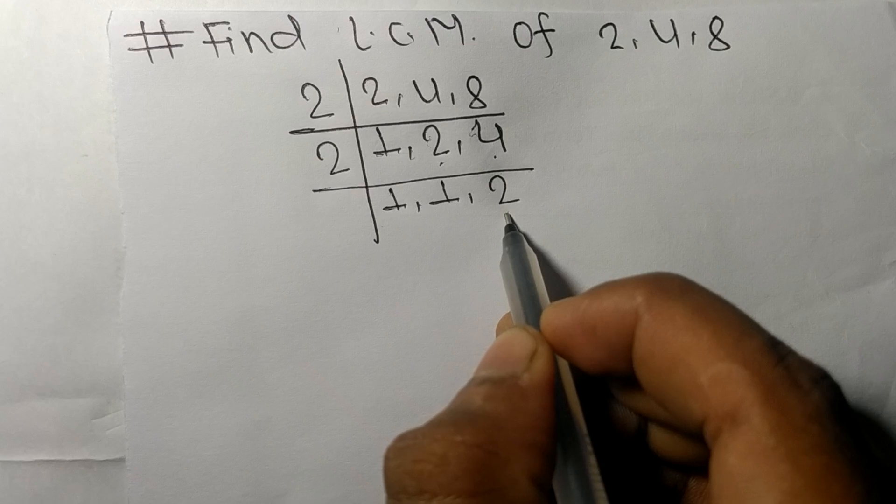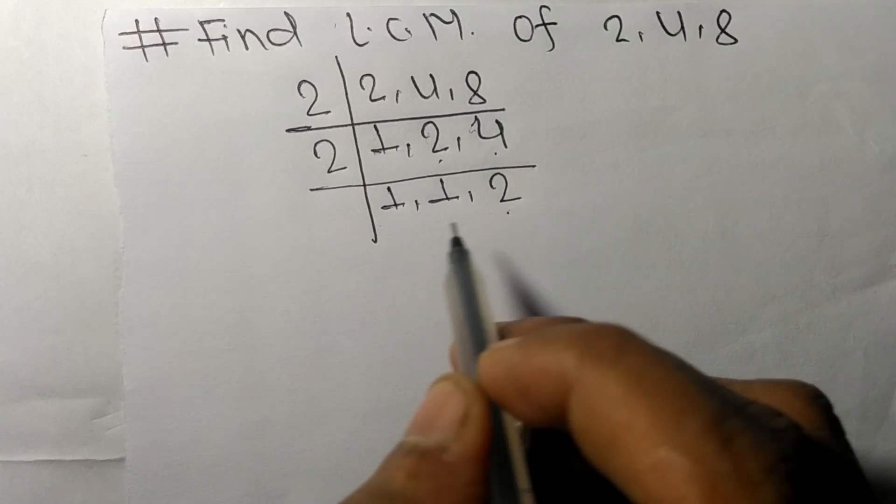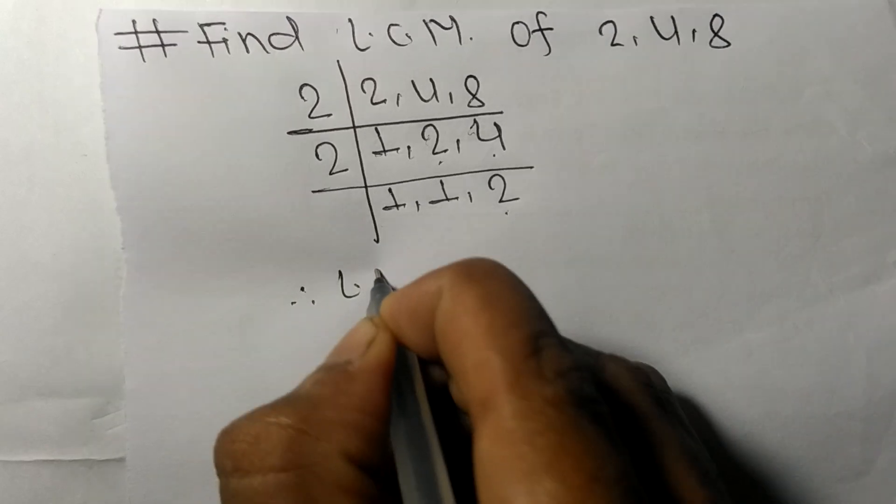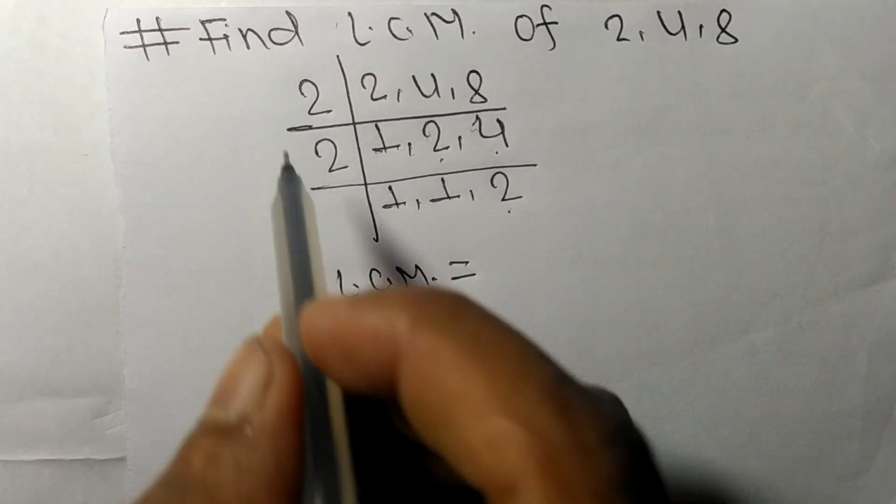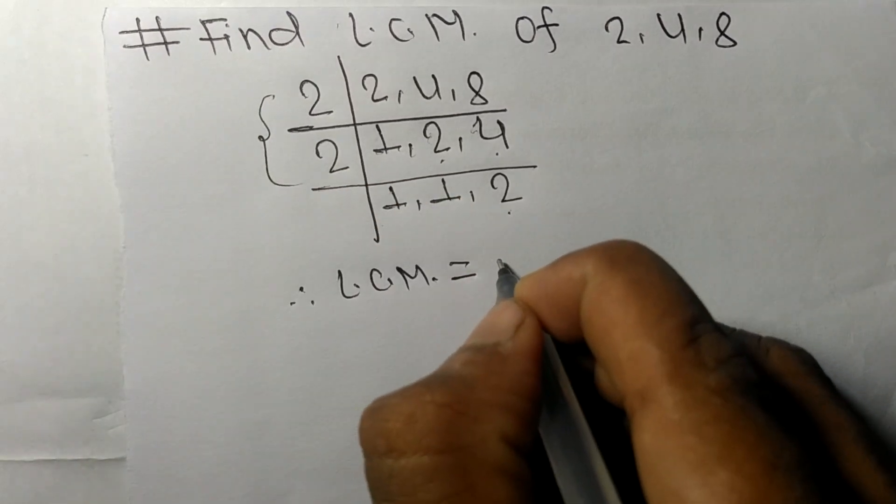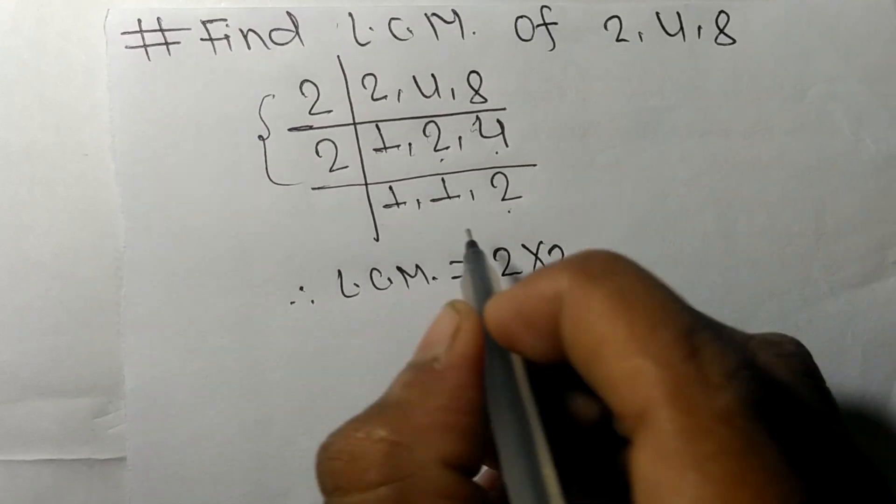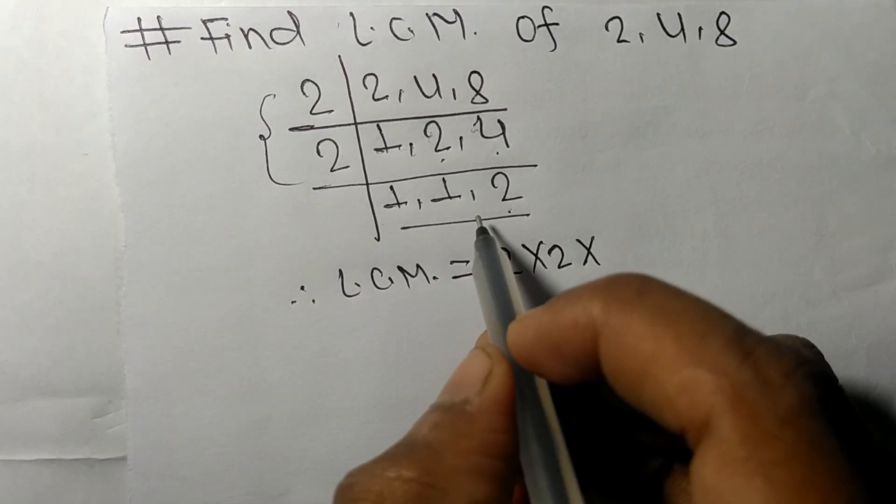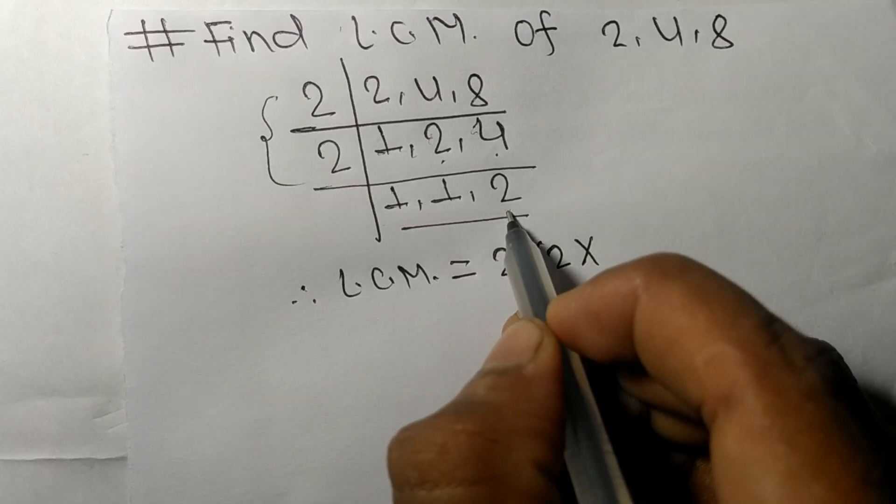Now we got only 2 here which is divisible by the same number, so we can neglect it. Therefore LCM is equal to, from this side it is 2 times 2, from here which takes the number greater than 1, so this is 2.